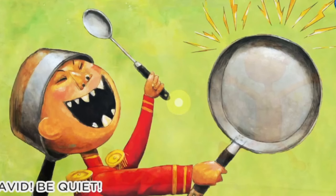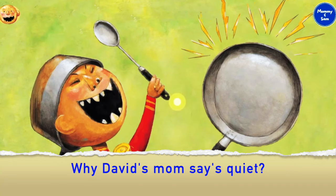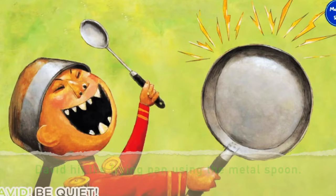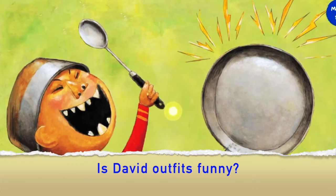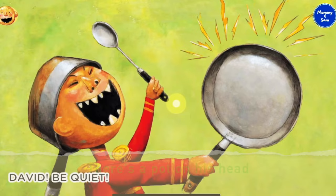David! Be quiet! Why does David's mom say quiet? David is hitting the frying pan with a metal spoon. What is David's outfit? Marching band outfit. Is David's outfit funny? Yes! Why? There's a pot on his head while he's doing the marching band.